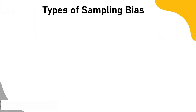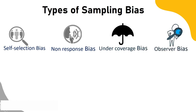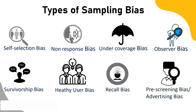Types of sampling bias: self-selection bias, non-response bias, under-coverage bias, observer bias, survivorship bias, healthy user bias, recall bias, and prescreening or advertising bias. Let's study them in detail.